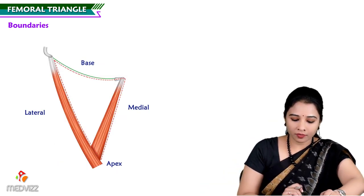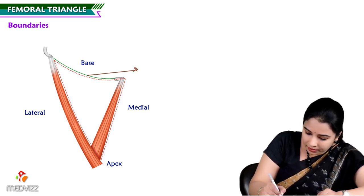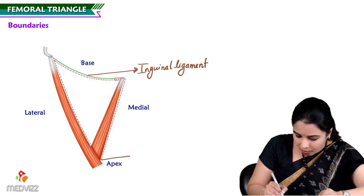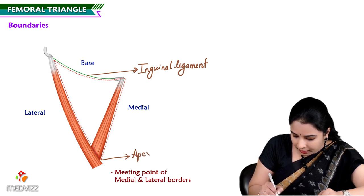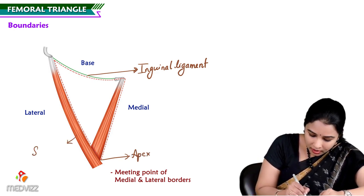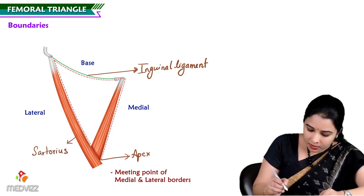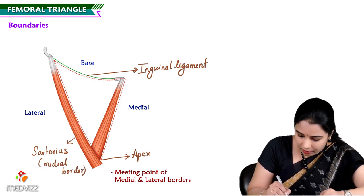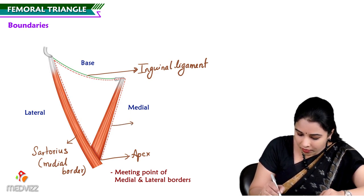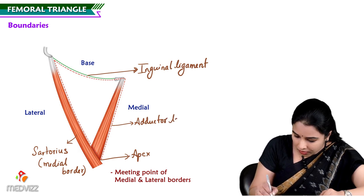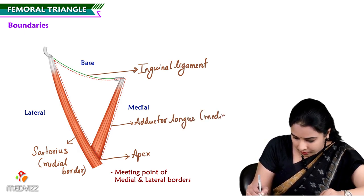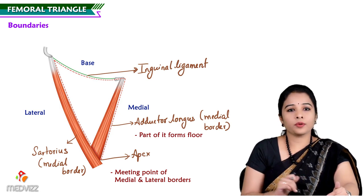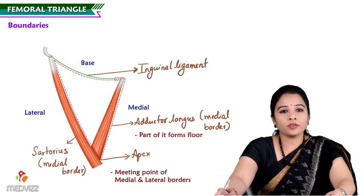Here is the outline of the femoral triangle. The base is formed by the inguinal ligament. The apex is formed by the meeting point of the medial and lateral borders. The lateral boundary is formed by the sartorius — specifically the medial border of sartorius — and medially, the medial border of adductor longus. Part of adductor longus also forms the floor of the femoral triangle.